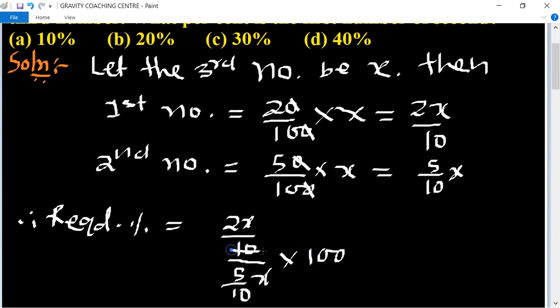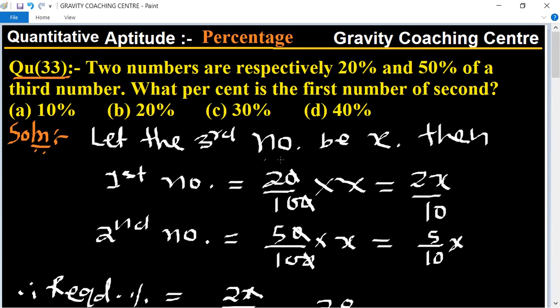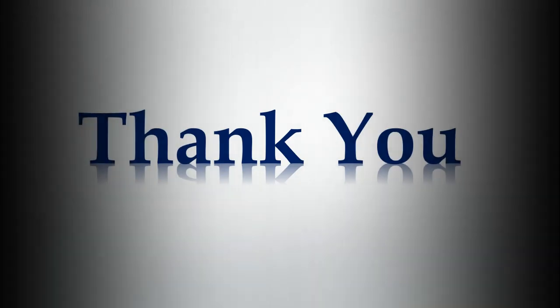So 10, 10 cancel, x, x cancel. In table of 5, 5 to the 20, so 20 to the 40. So 40 percent is the required answer. Option D is the right answer. Thank you.